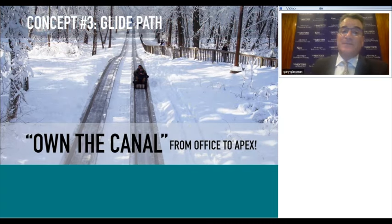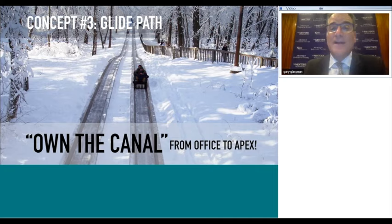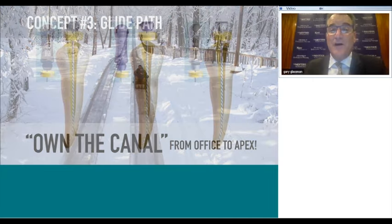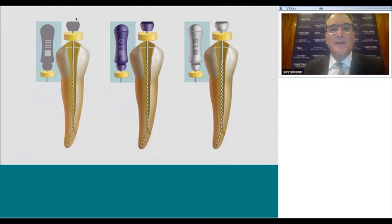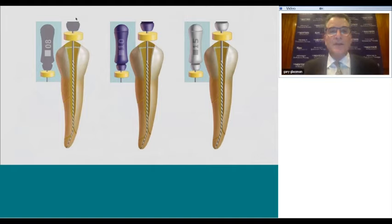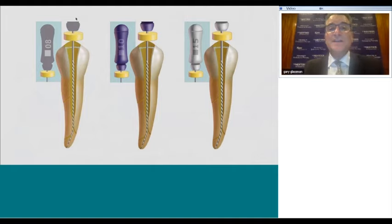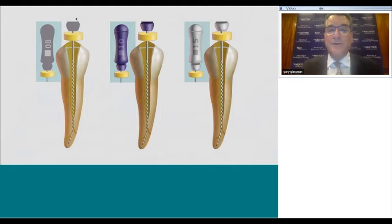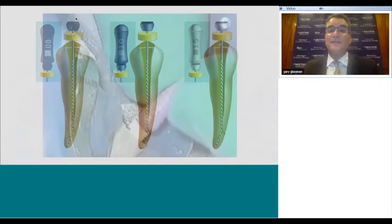Concept three is the glide path. We need to create a pathway for our nickel-titanium instruments to follow, and we do that using hand files. We have far better tactile control with them—we need to scout and survey the canal with respect to curvature, size, and calcification. Only once we achieve a glide path from orifice to apical terminus should we use nickel-titanium files.